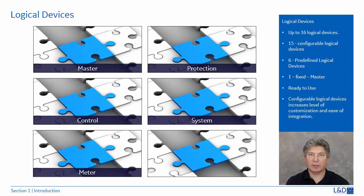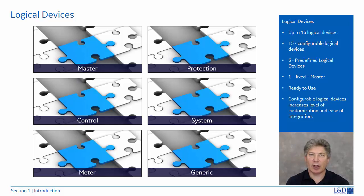Metre contains metering and measurements other than PMU, including signal sources. Finally, General contains flex logic, virtual outputs, non-volatile latches, flex elements, and records — things such as oscillography, the data logger, security, the front panel, and the clock.